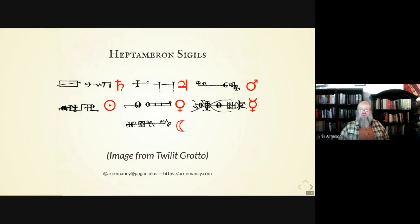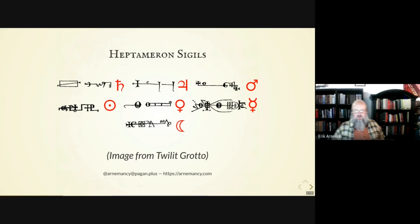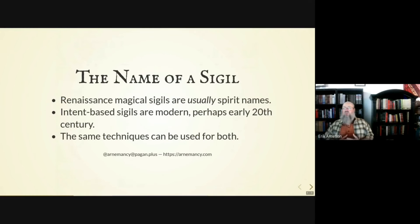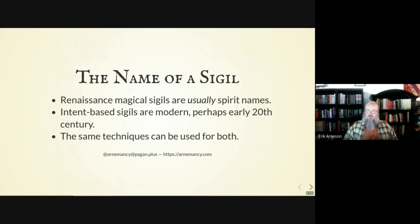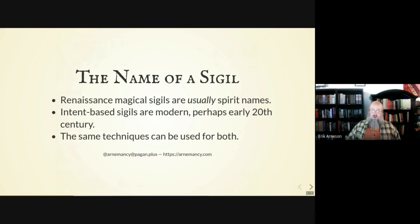A lot of those, you can find directions for using them in the grimoires that they are printed in, but you can also adapt them with modern practice. Renaissance magical sigils are usually based around the name of a spirit. The Key of Solomon sigils are a little different since most of them have kind of an intent, but they're still tied to a planetary archangel. Mostly intent-based sigils are modern, probably from the early 20th century. I suspect that Austin Osman Spare was the first one who really popularized that, but a lot of the same techniques can be used for both.